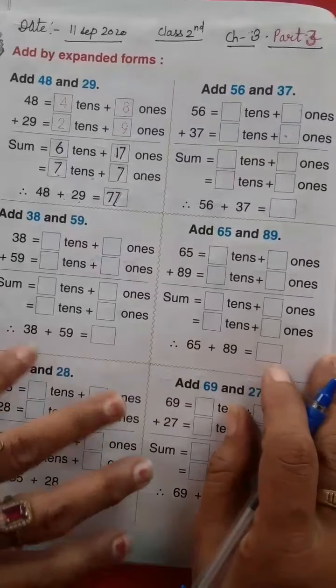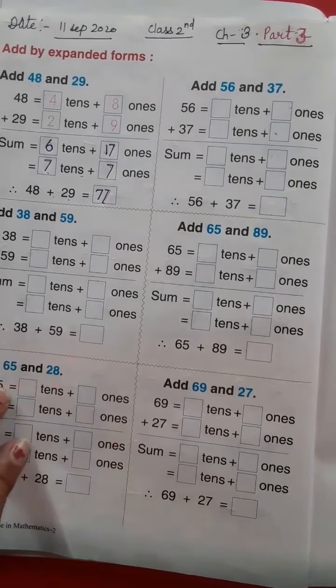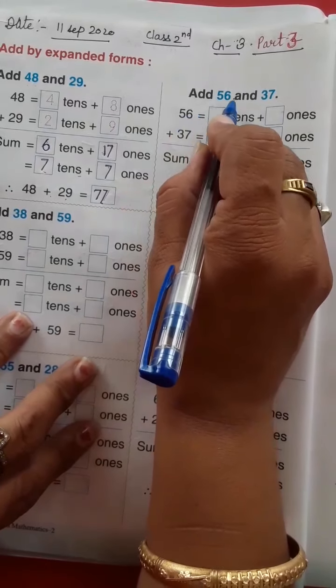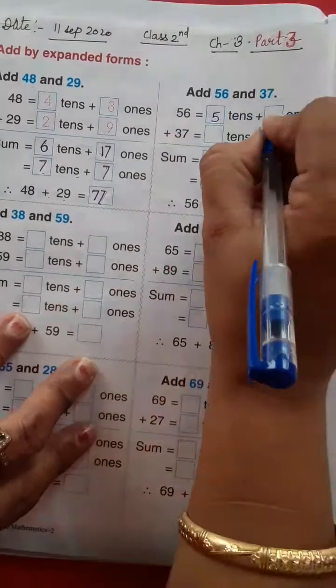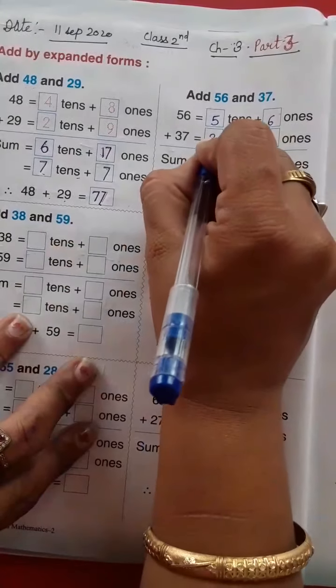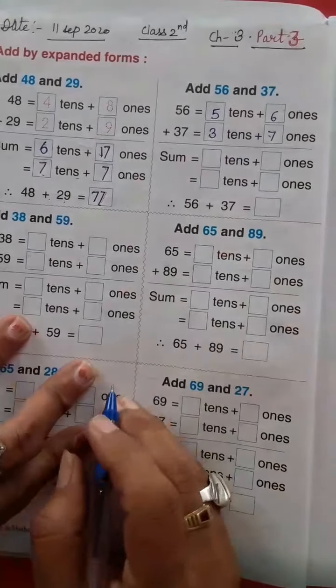Now hum ek aur karenge isko tarike se. 56 plus 37. So, 5 tens 6 ones, 3 tens and 7 ones.